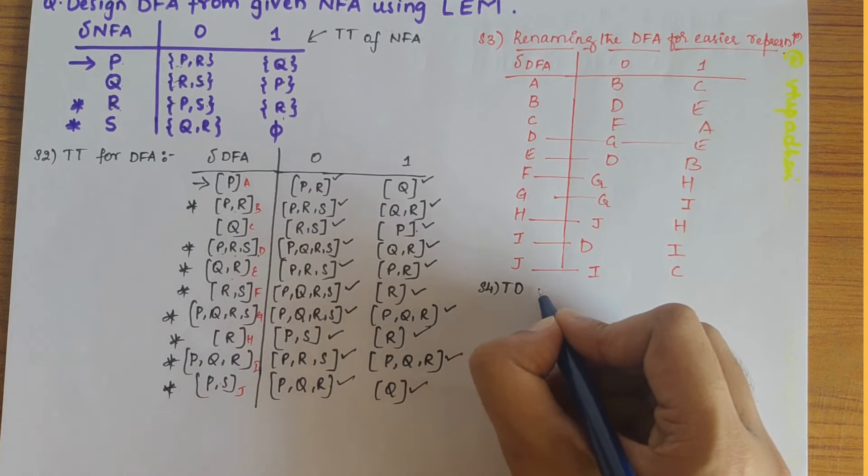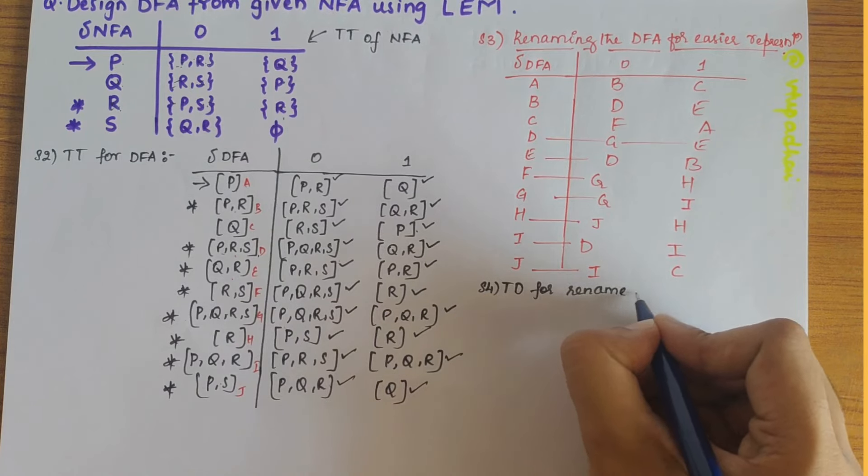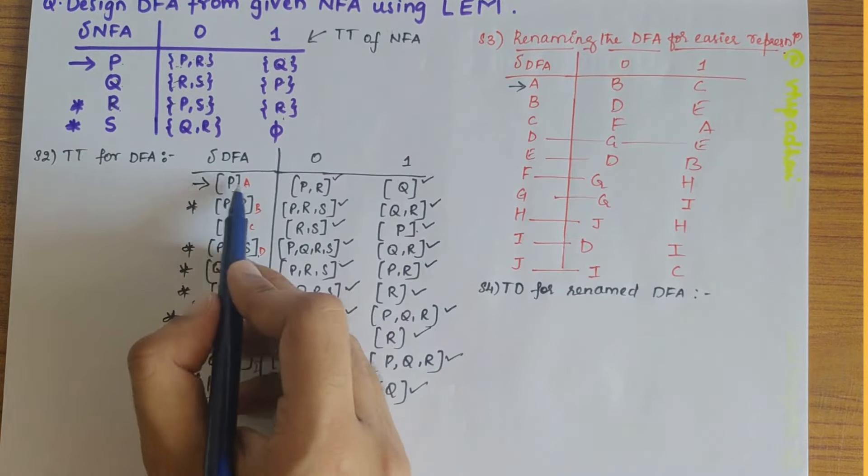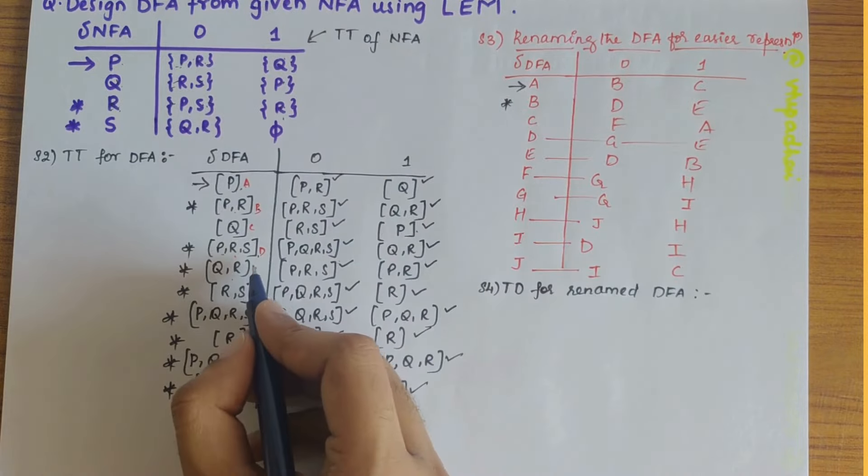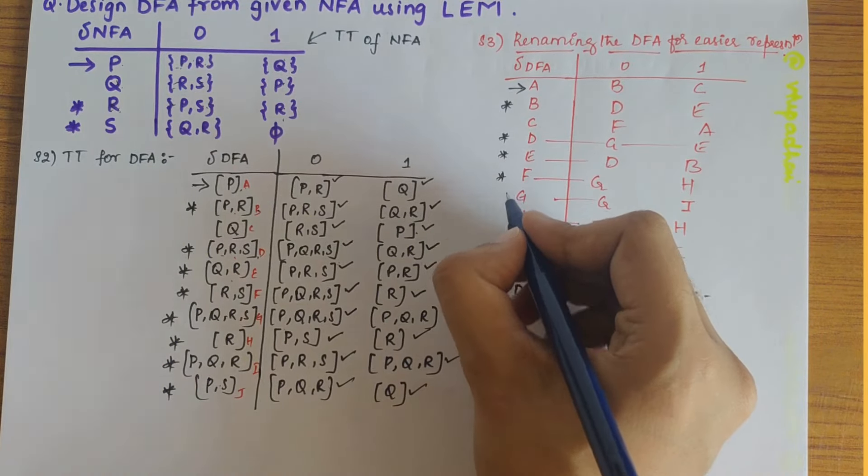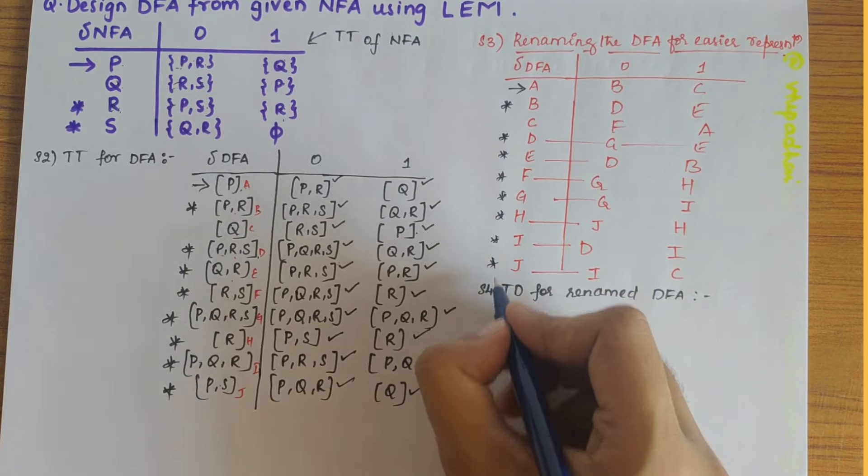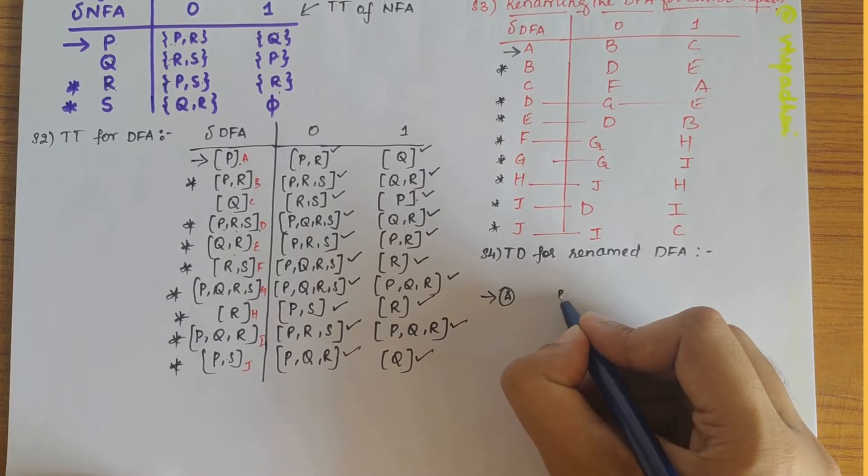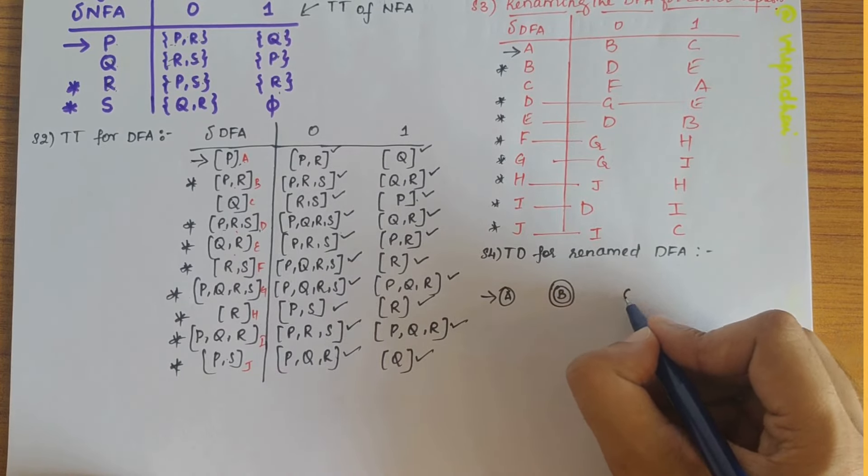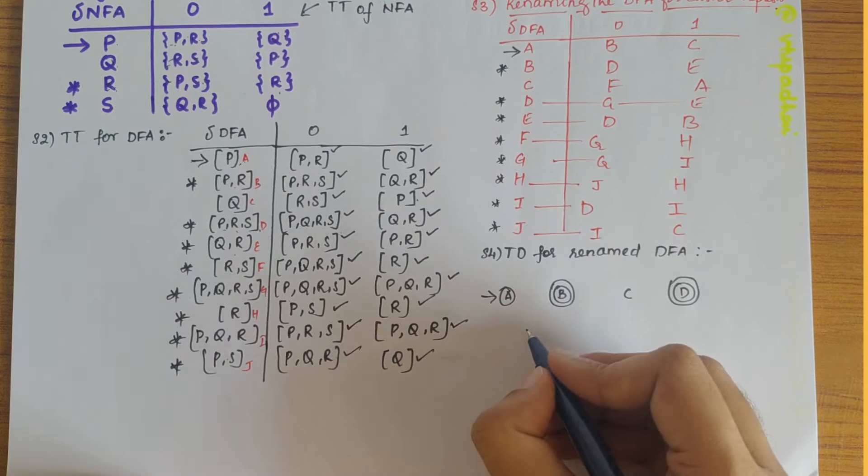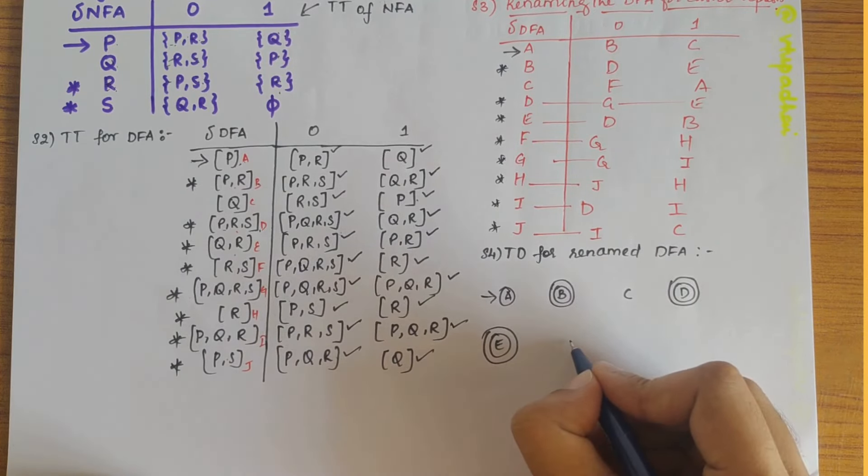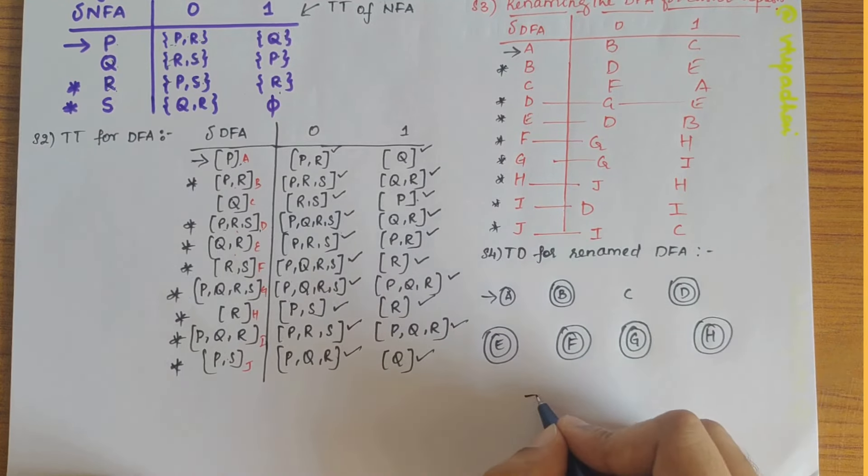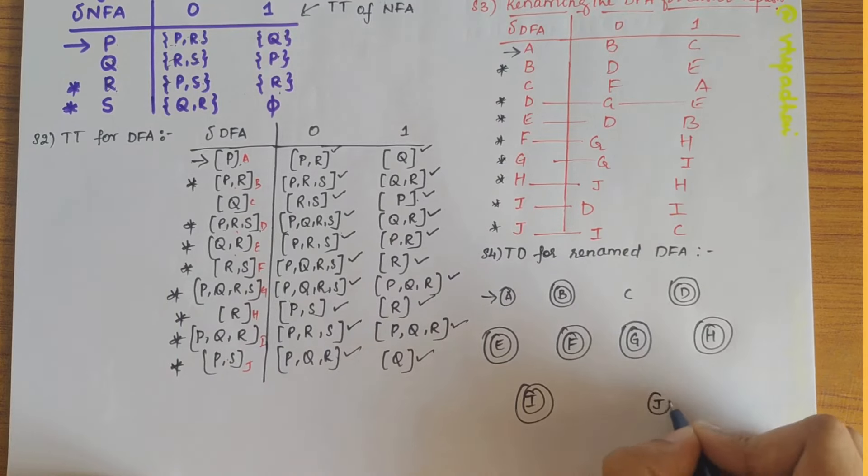My next step is to draw the transition diagram. A, B, C, D, E, F, G, H, I, J. So let's draw the transition diagram here first. A, B, C, D, E, F, G, H, I, and J.